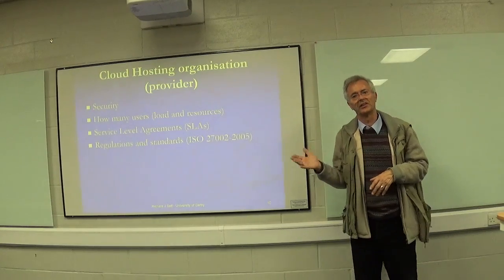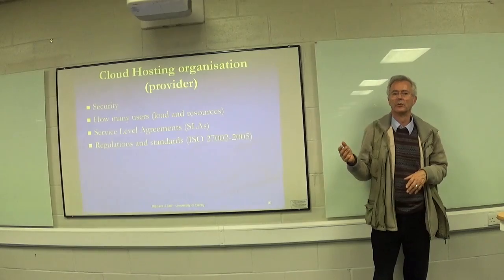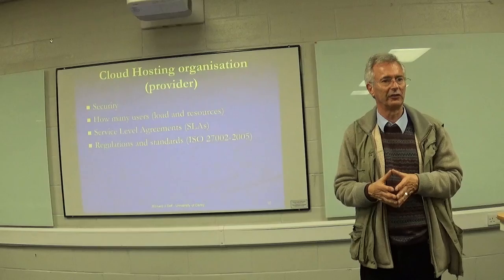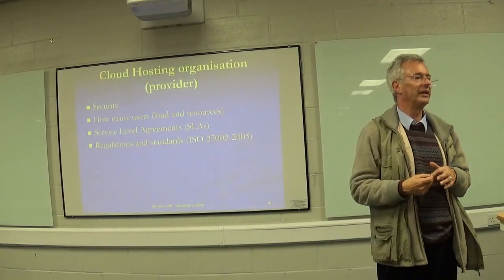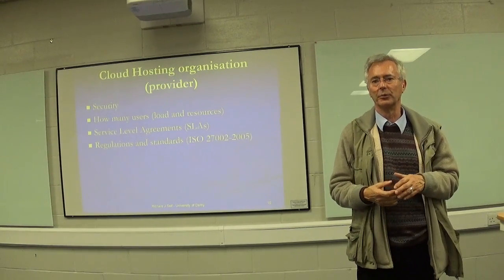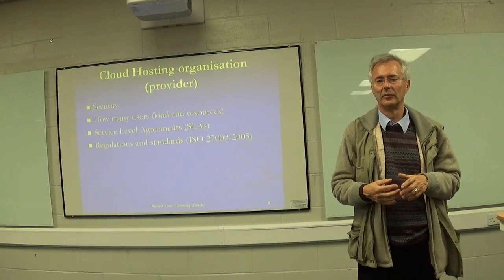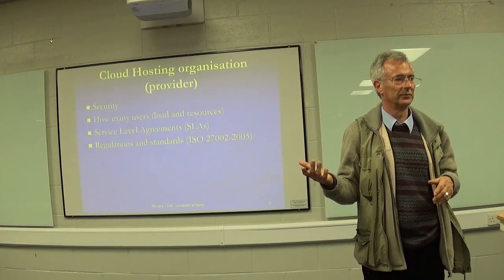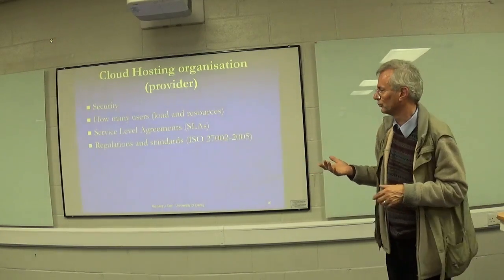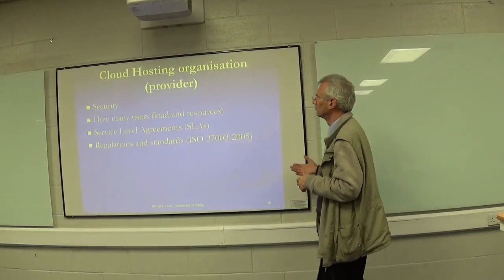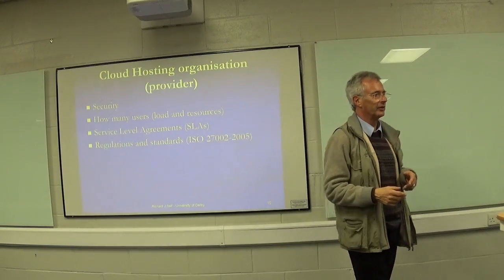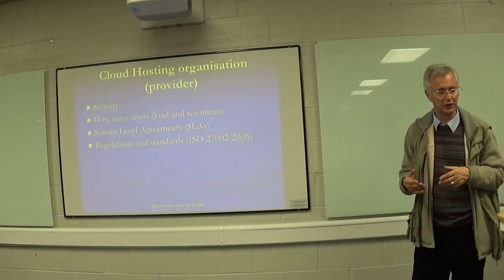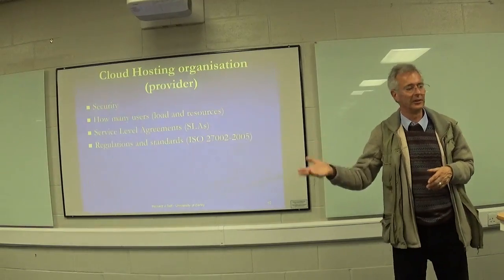Five nines is quite a decent level to go for. 99% availability is hardly worth bothering with these days — that means one hour in every hundred hours the system won't be available, which is three and a half days a year when the service can't be used. Think also about ISO 27002, either the 2005 version or the 2011 version — they all cover the same sort of stuff.